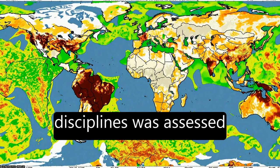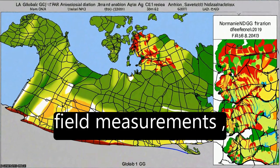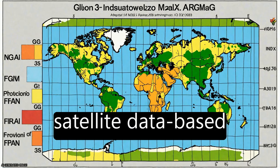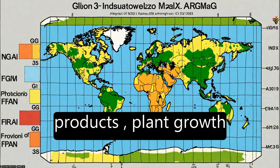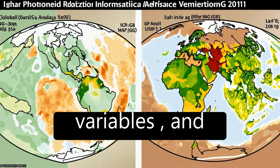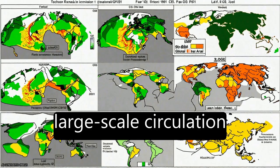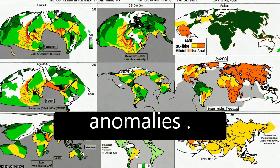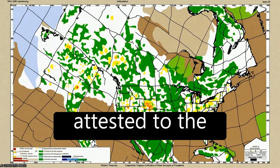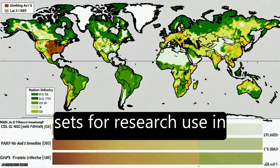The quality of these data sets for scientific research in other disciplines was assessed through comparisons with field measurements, existing alternate satellite data-based products, plant growth-limiting climatic variables, and correlations with large-scale circulation anomalies.